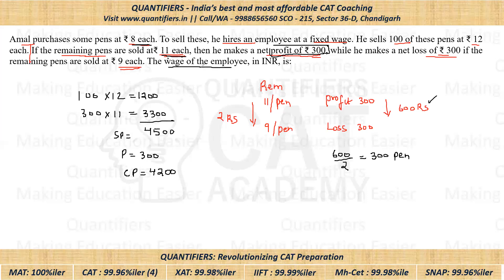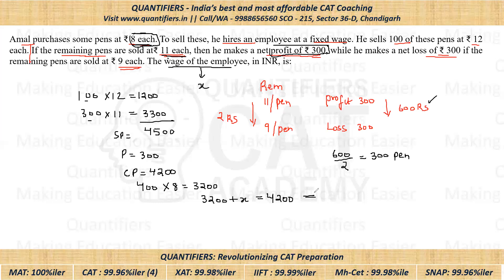Very important. I am assuming the wages of the employee as X. Amal purchases pens at the rate of 8 rupees — total pens purchased were 100 and 300, that is 400 pens. At the rate of 8 rupees, the cost of pens is 3200. So the overall cost will be 3200 plus the wage of employee X, and this should be equal to the overall cost price of 4200. From here we can find the value of X, which comes out to be 1000.